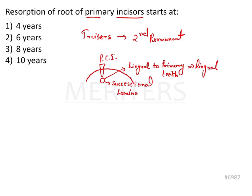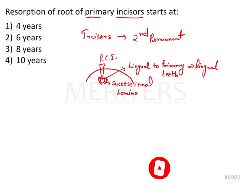This is an important point to remember. If we want the tooth to come at the exact position as that of the deciduous tooth, then after the successional lamina has formed the crown, it has to move buccally first. When it moves buccally, it will cause resorption at the lingual aspect of the root. So the lingual aspect of the root will be resorbed first, and then the permanent tooth will acquire a position just apical to the resorbed root of its primary counterpart.